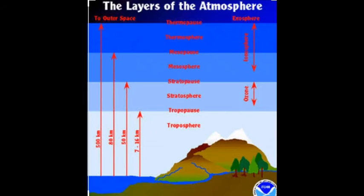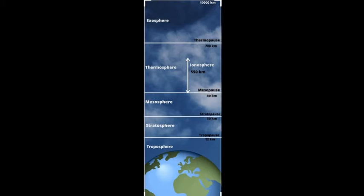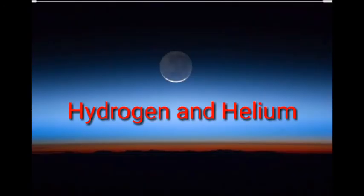The thermopause separates the thermosphere and the exosphere. The exosphere is the outermost layer of the atmosphere and gradually merges into space. It is a very thin layer where air pressure is the lowest.